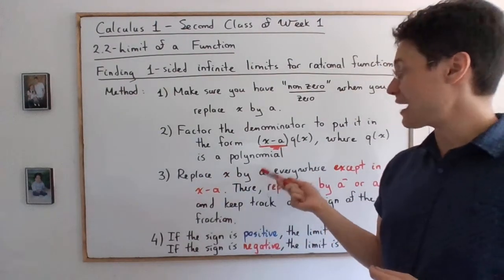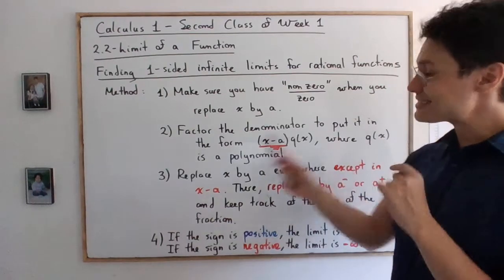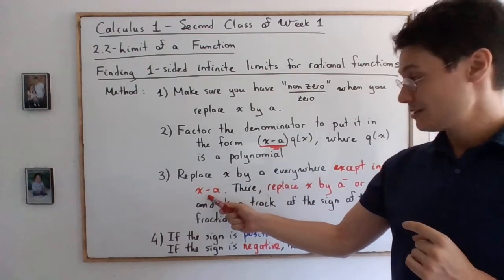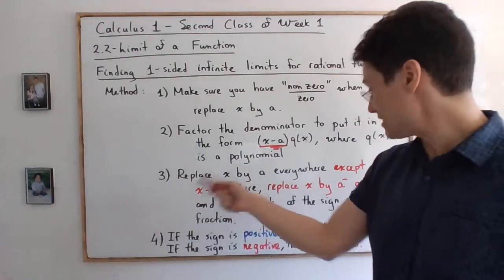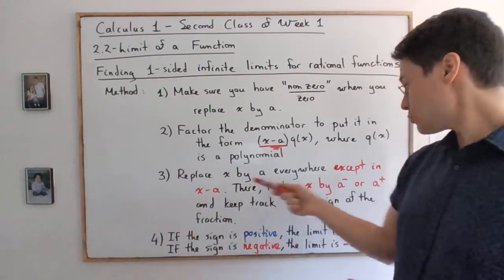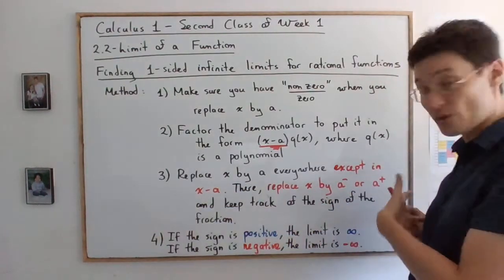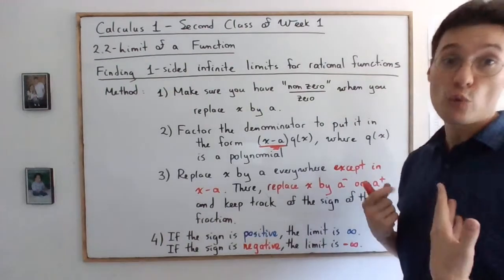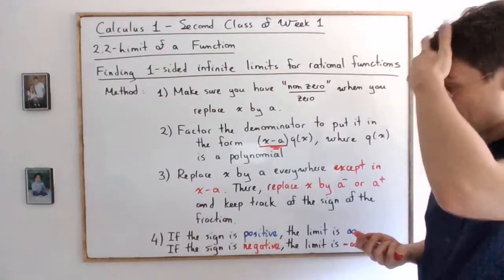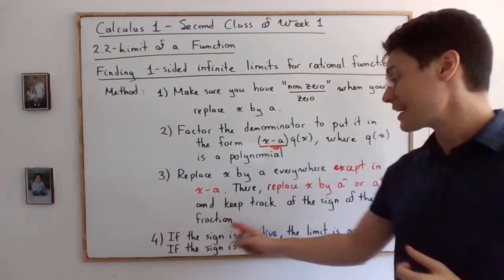Then, you will replace x by a everywhere except in x minus a. So except in this factor. In here, you will replace x by a minus or a plus depending on which one-sided limit you're taking. And you will keep track of the sign of the fraction.